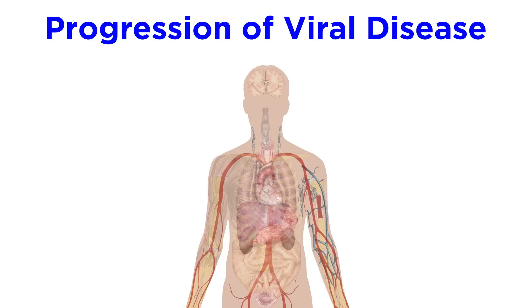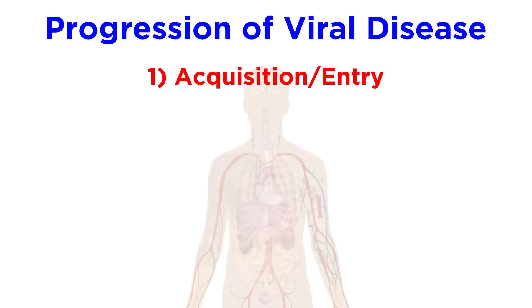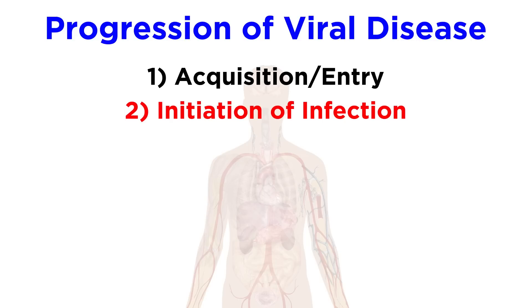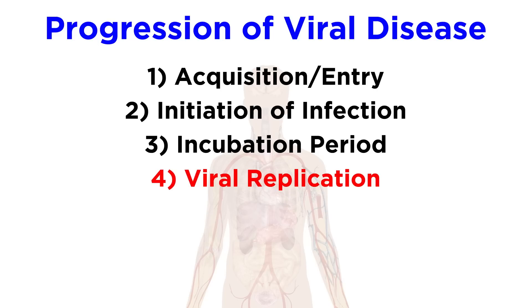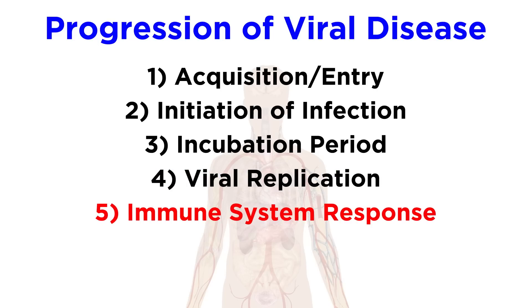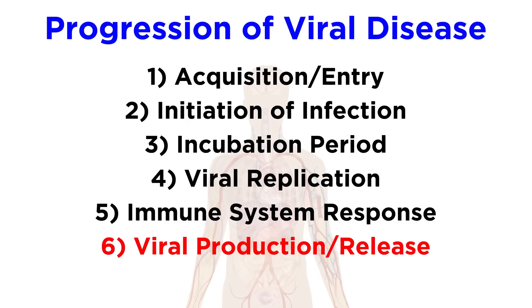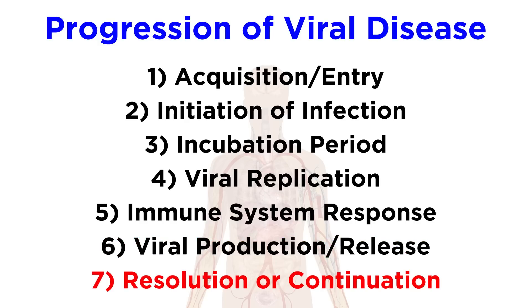Let's take a look at these steps. First, we have acquisition, or entry into the body. The second step is initiation of infection. After an infection is initiated, the next step is an incubation period, where the virus is amplified and may spread to a secondary location. From here we see replication of the virus in the target tissue, which causes the observable signs of disease. Next, our immune system responds, either limiting or contributing to the disease. The virus is then produced and released, causing contagion. Finally, the disease is either resolved or continues as a persistent infection or chronic disease.